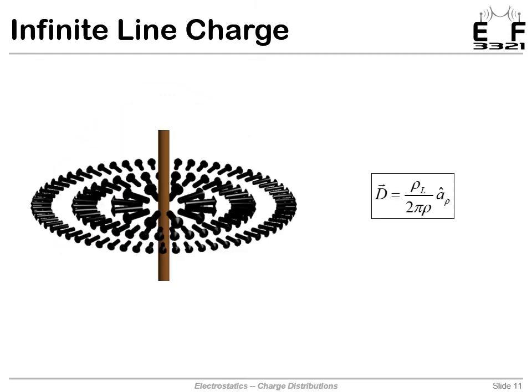The total field around a line charge, we will derive it in the examples, is given on the right. Notice the one over rho dependence. Rho is the distance from that line charge. So it decays as you go away from the line charge.